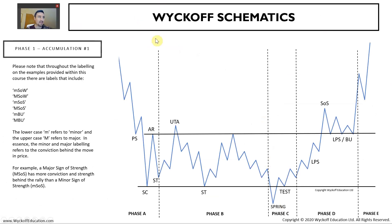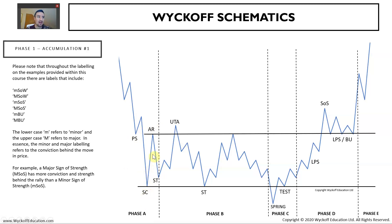This is our first accumulation schematic. As we come into phase A, there are different phases within these schematics: phase A, phase B, phase C, phase D, and phase E. Phase A is all about the end of a trend - we have our selling climax, automatic rally, and secondary test. That marks the end of the prior downtrend, with the automatic rally being the largest rally seen within the prior downtrend, all happening on very climactic volume.